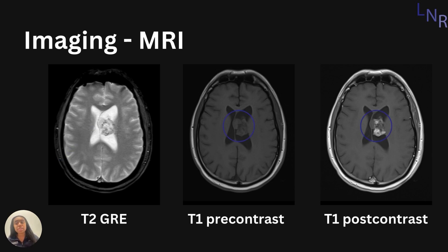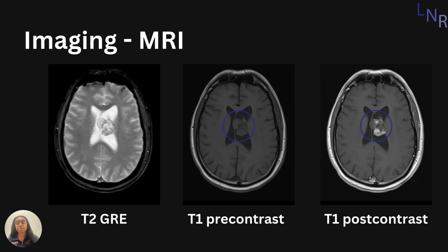T1 is used to show the anatomy of the brain and structures clearly, which is helpful to identify normal versus abnormal anatomy. In this example, we see a T1 pre-contrast versus a T1 post-contrast, which illuminates the pathology of the central neurocytoma, again pushing against that septum pellicidum.